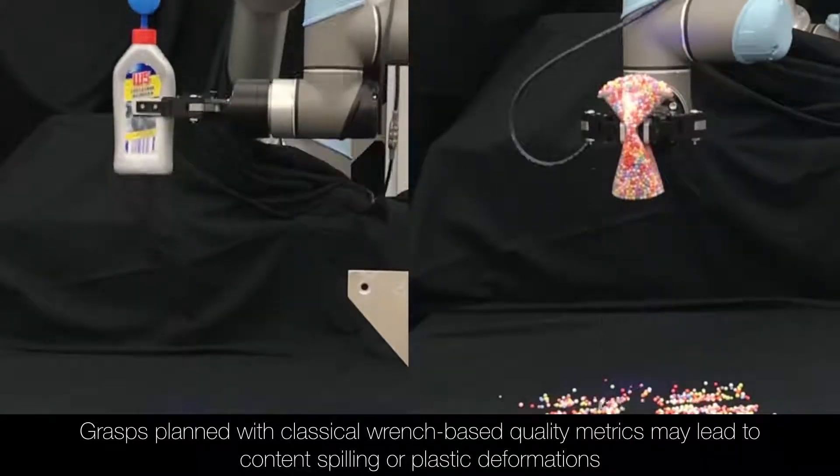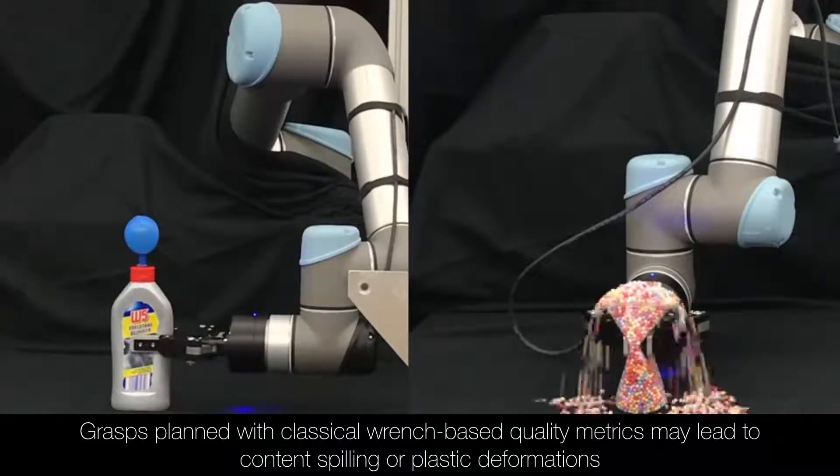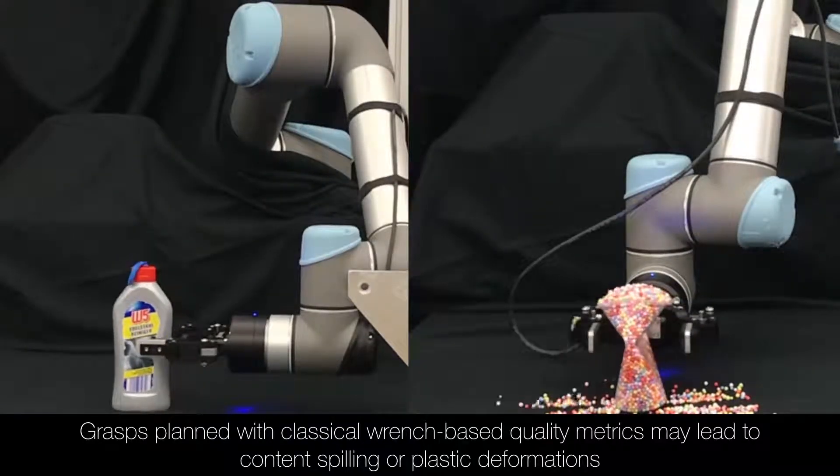Here are two example grasps planned with classical wrench-based quality metrics. The contents spilt and the plastic cup is not returned to its original shape after the grasp force is released.